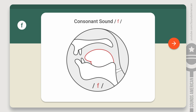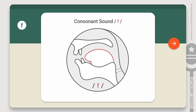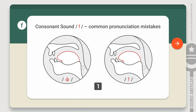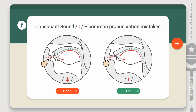Now, let's try saying it. Here are a few typical mistakes that people make when pronouncing this sound. The most common problem is that many non-native speakers pronounce this sound without enough friction. Why does this happen? Most often, people try to produce the friction using only their lips, since this is how they do it in their languages. This way, the passage for the airstream is too wide, and there is no obstacle to create sufficient friction.